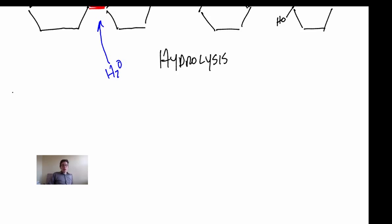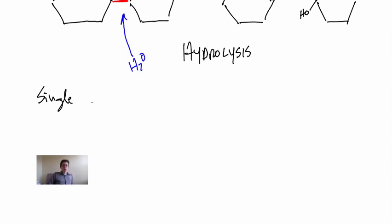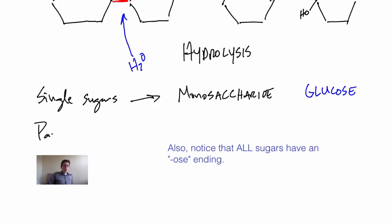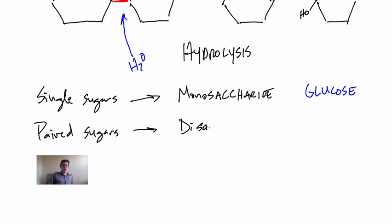One more thing: single sugars. The term for these is a monosaccharide, M-O-N-O-S-A-C-C-H-A-R-I-D-E. An example of a monosaccharide would be like glucose or fructose or ribose. We can also have paired sugars. A paired sugar is called a disaccharide, dye meaning two. And a disaccharide is sucrose.